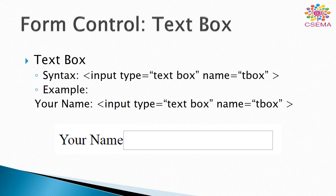Here we study the textbox control. The textbox control is given as input type equal to text, and the name can be defined as tbox. In the example, we created input type text with name equal to tbox. Here is the output — a 'Your Name' label with a textbox area where the user provides their name, and after submitting, it is saved to the database or wherever we want to save it.